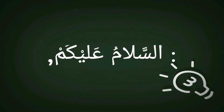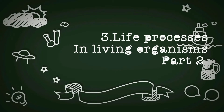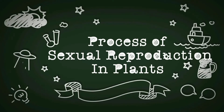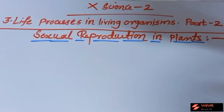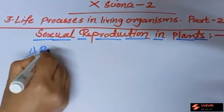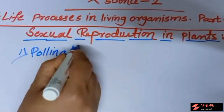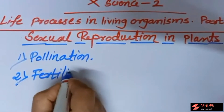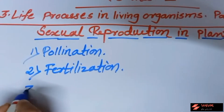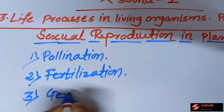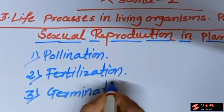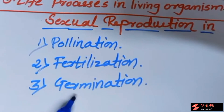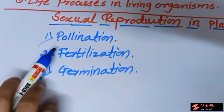Assalamu alaikum everyone. Today in this fifth part of life processes in living organisms, we will be studying the process of sexual reproduction in plants. There are three main steps: first, pollination; second, fertilization; and third, germination. First of all, we will see about pollination.